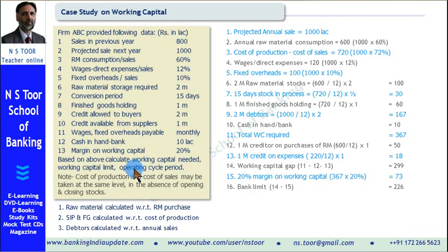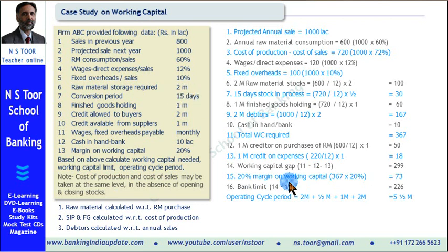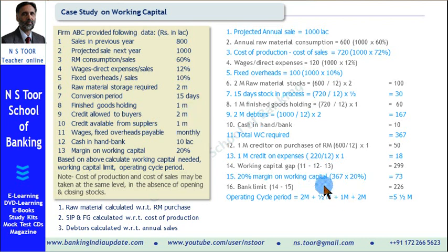Now we calculate the operating cycle period. Operating cycle period includes: raw material period of 2 months, conversion period of 15 days, finished goods holding period of 1 month, and credit allowed to buyers of 2 months. Hence the total operating cycle period is 5 and a half months.